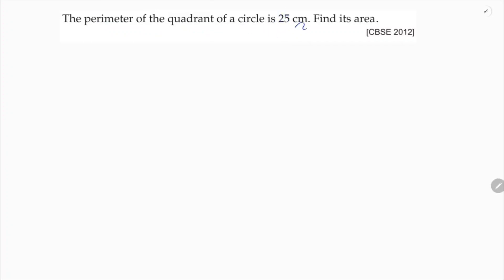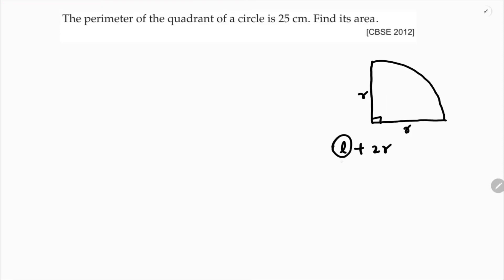The perimeter of a quadrant of a circle is 25 centimeters — find its area. The perimeter of a quadrant includes the arc length plus two radii. The arc length l is found using (theta/360) × 2πr. With theta = 90°, that gives (90/360) × 2πr = πr/2. So the perimeter of a quadrant is πr/2 + 2r.